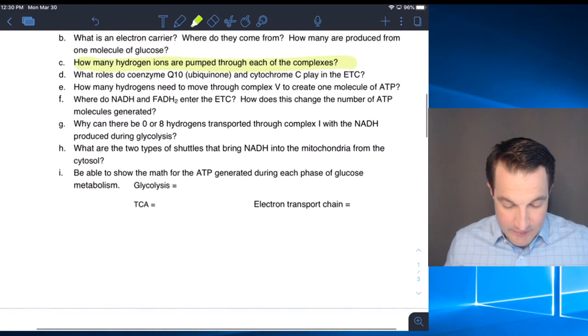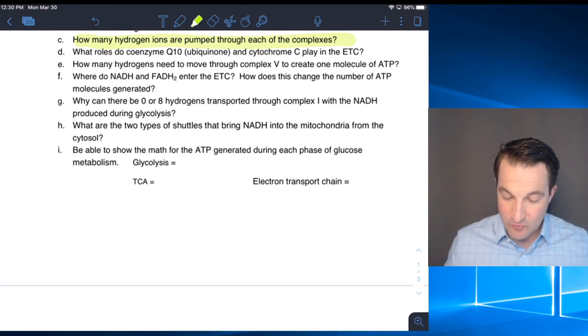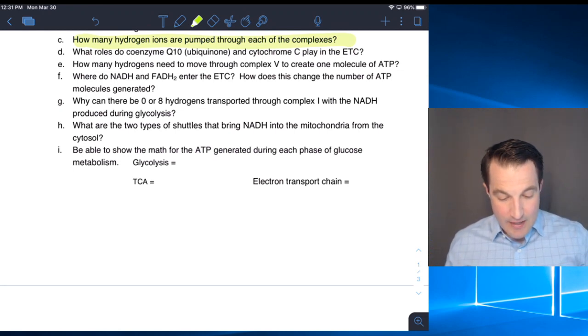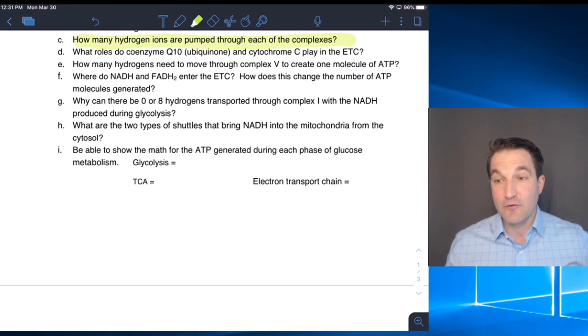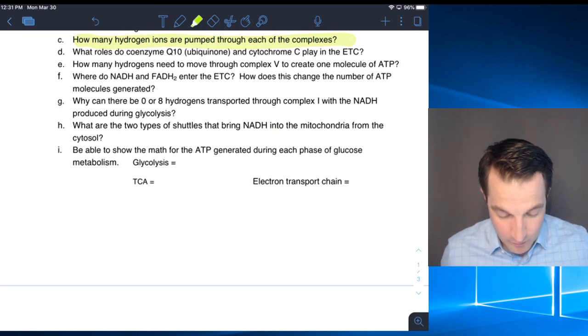How many hydrogens need to move through complex five to make one molecule of ATP? That's going to be four. And if it's four, and we get 10 from one NADH, that means for every single NADH, we get about 2.5 ATPs being able to be created. NADH and FADH2 enter at complex one and two respectively. NADH creates 2.5 ATP, but FADH2 is missing out on four hydrogens, so we'll have 1.5 ATP from that.